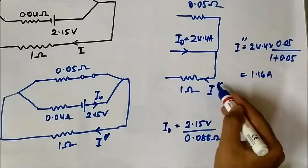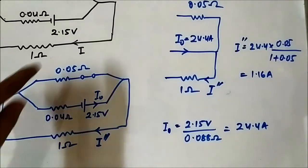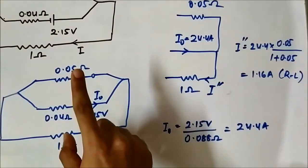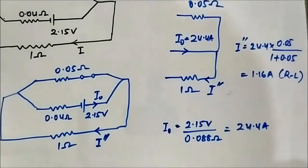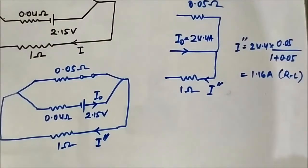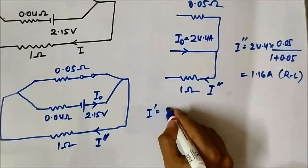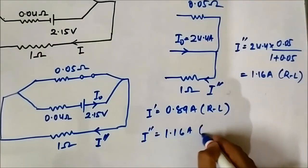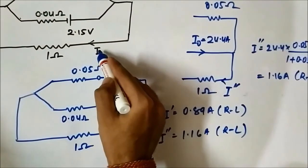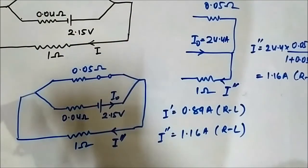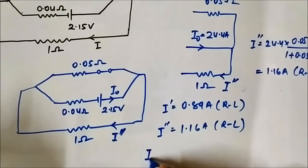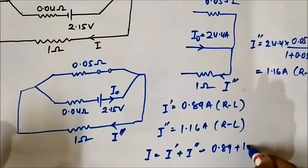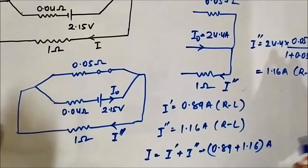The direction of i double dash is also from right to left, same as the reference direction. So we have determined the currents due to both sources: i dash = 0.89 ampere (right to left) and i double dash = 1.16 ampere (right to left). Since both are in the same direction as the original reference, we simply sum them.